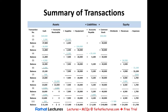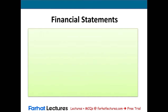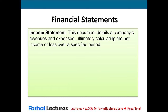Let us start by looking at the figures that we will be using to prepare the financial statements. We're going to be looking at the ending balances that you see on this summary of transactions. If you're not sure how we came up with those balances, please take a look at the prior recording — we went through all 11 transactions to come up with the ending figures. We're going to prepare three financial statements. The statement of cash flows will be covered in a separate chapter.